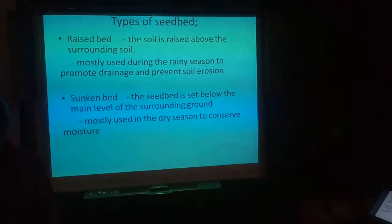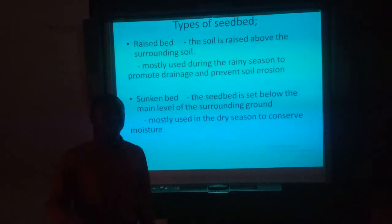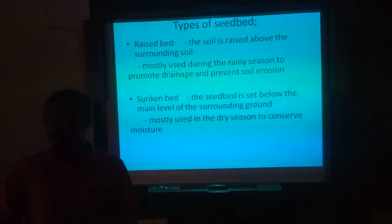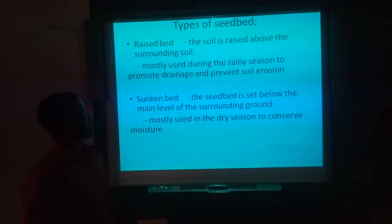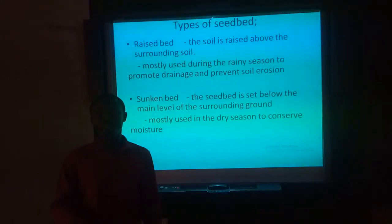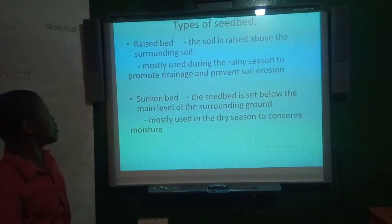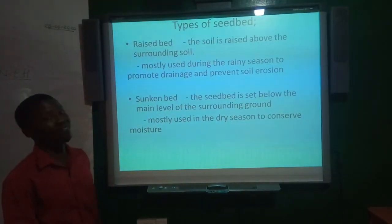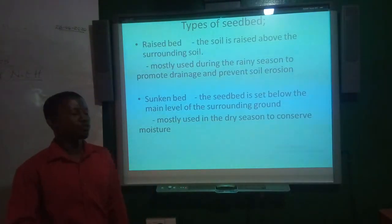There are two main types of seed bed: raised beds and sunken beds. Raised beds are prepared by gathering topsoil raised above the surrounding soil, normally used during the rainy season to control soil erosion and promote good drainage. Sunken beds are set below the main level of the surrounding ground and are adopted during the dry season to conserve soil moisture.